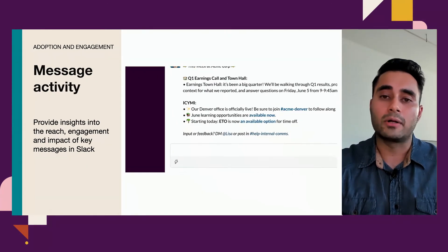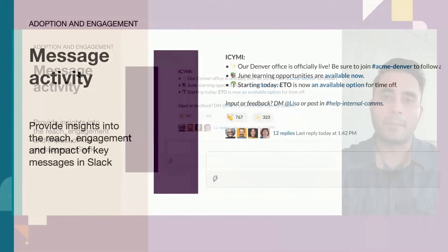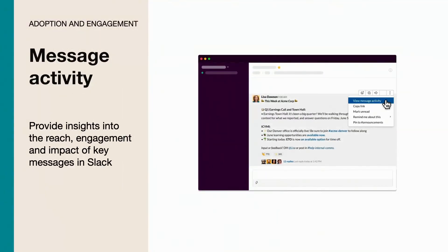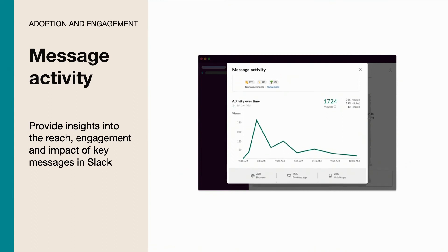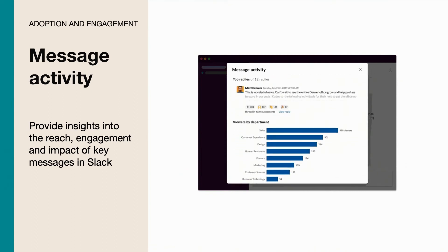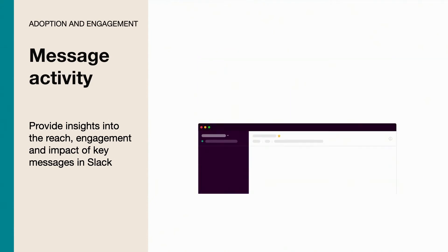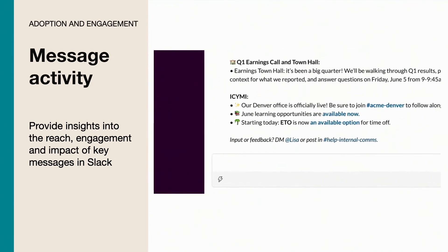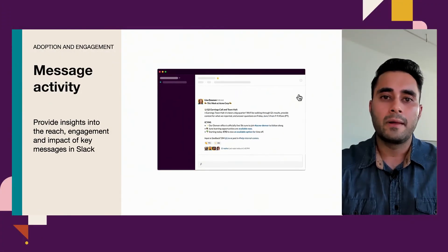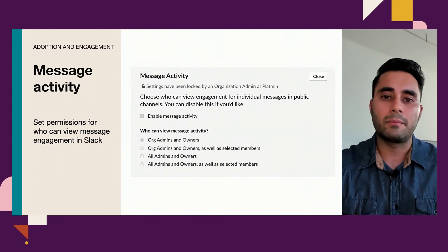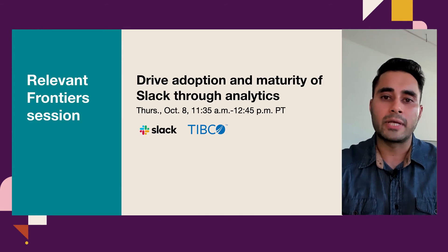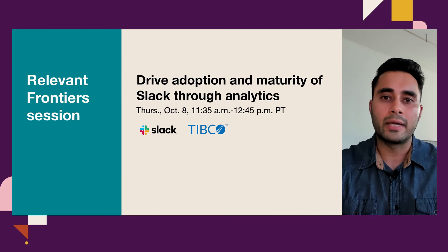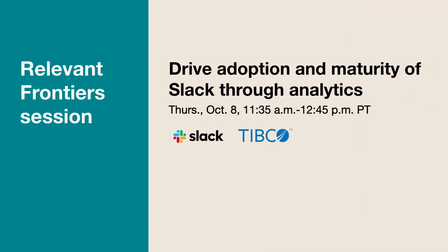We recently launched a feature called Message Activity. Looking back to the example of announcement-only messages from executive or HR teams, this feature actually allows you to see top replies, which departments are engaging with a specific message, and really allows you to see how to optimize the best messages to cut through all that noise within Slack. This feature is turned on by default at the workspace level, but as a Slack administrator, you've got the ability to turn it off. I highly encourage you to attend the session with TIBCO to learn about how they've used organizational trends and the analytics API to drive deeper engagement.